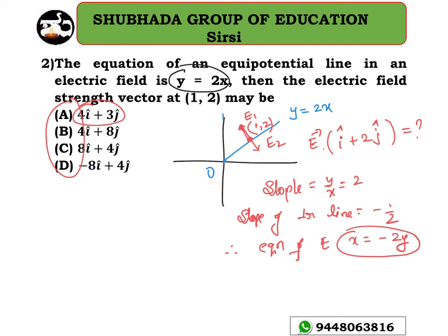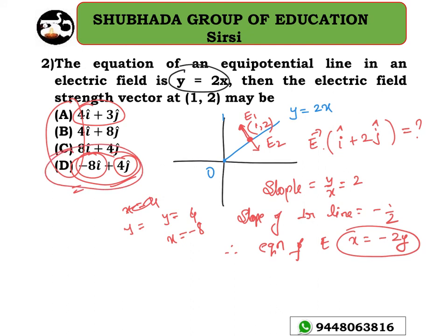This is the equation for the electric field. Let's check the options: if x equals 4y, and y equals 4y, then x equals minus 8y. Option D is satisfying the answer. So option D is the right answer here.